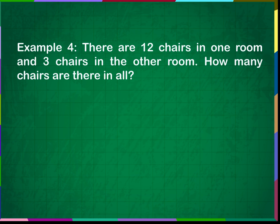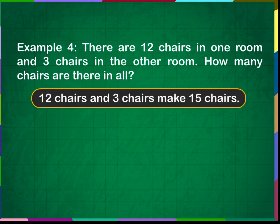Example 4: There are 12 chairs in one room and 3 chairs in another room. How many chairs are there in all? 12 chairs and 3 chairs make 15 chairs. 12 plus 3 is equal to 15. There are 15 chairs in all.